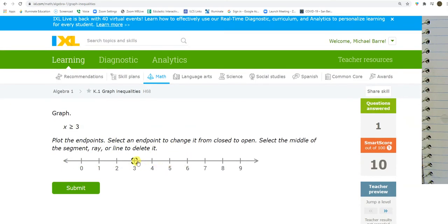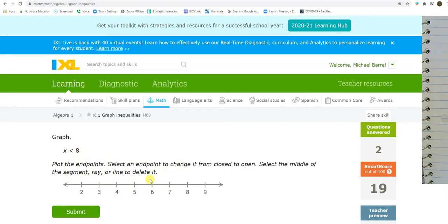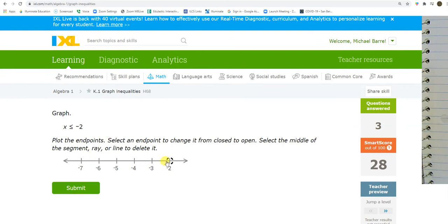Greater than 3. I go to 3. Closed circle. Above it. Let's see. Open circle at 8. Open circle. And I want the numbers less than 8. Let's see. Closed circle at negative 2. I want the numbers that are less than negative 2.